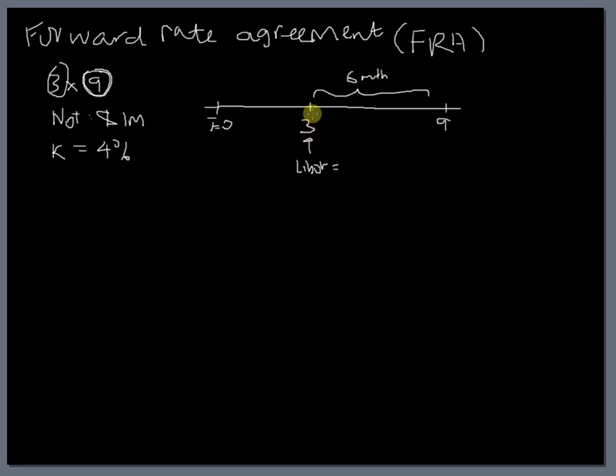So basically what it's saying is as at the 3rd month when the FRA matures, we should look at the 6 months LIBOR. On this date, assume that, say this is 5% and then determine what's going to happen as at the 9th month.